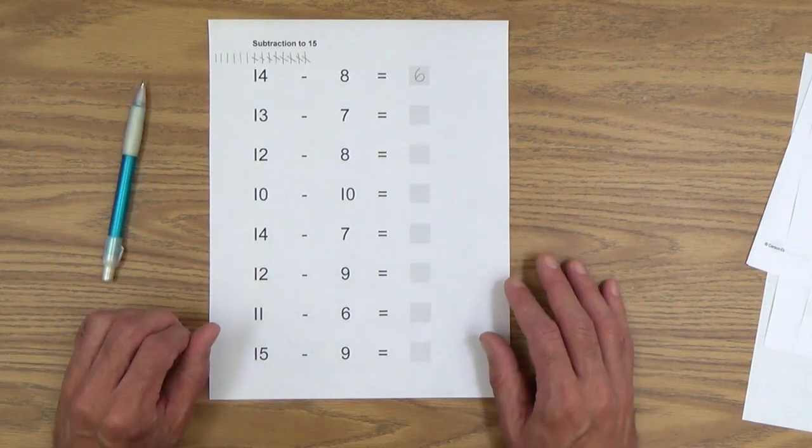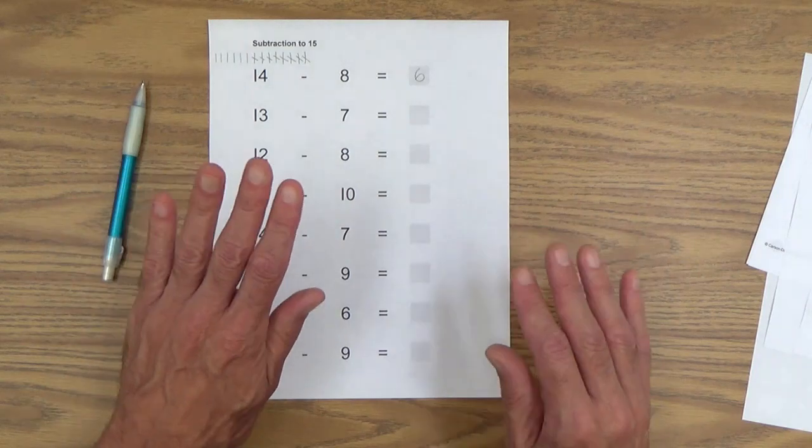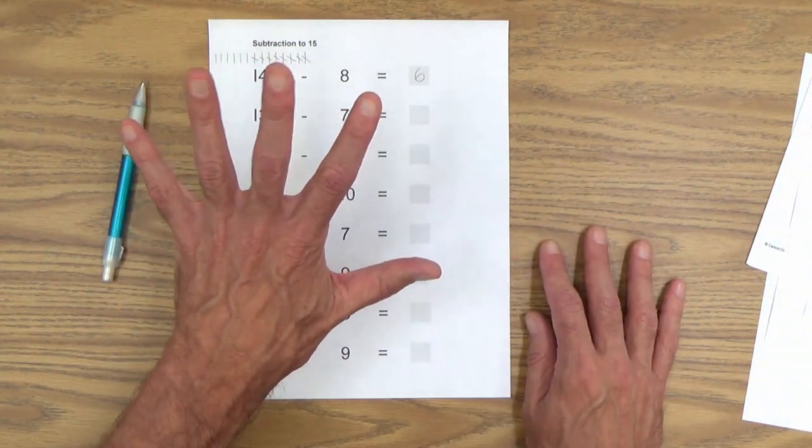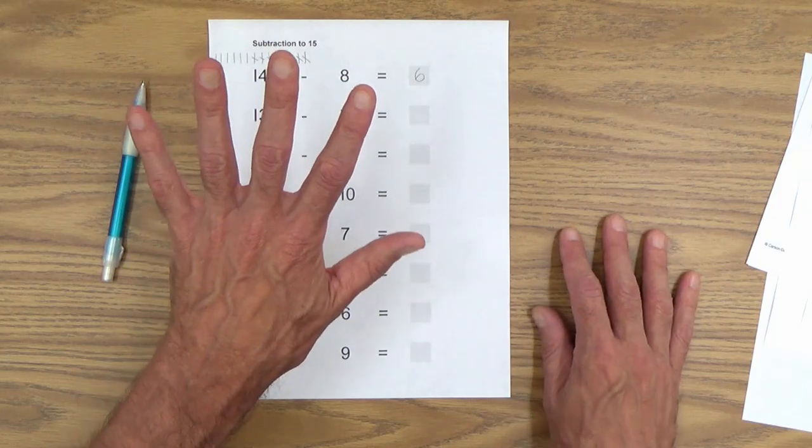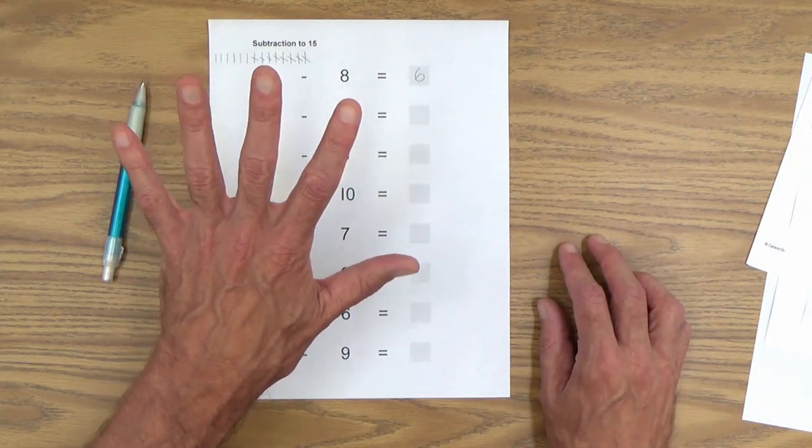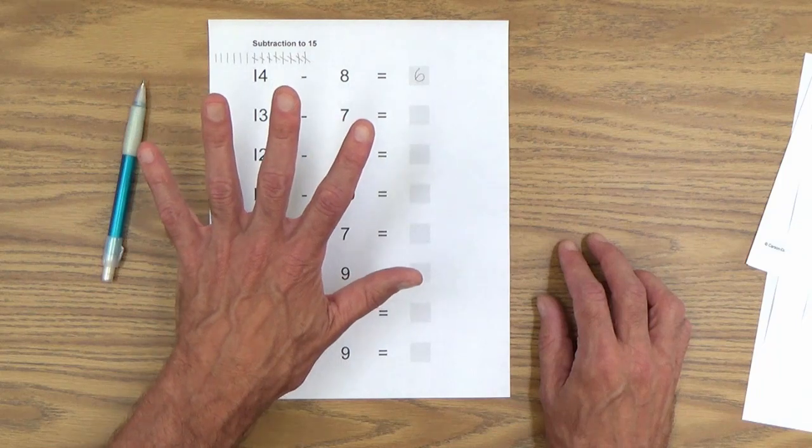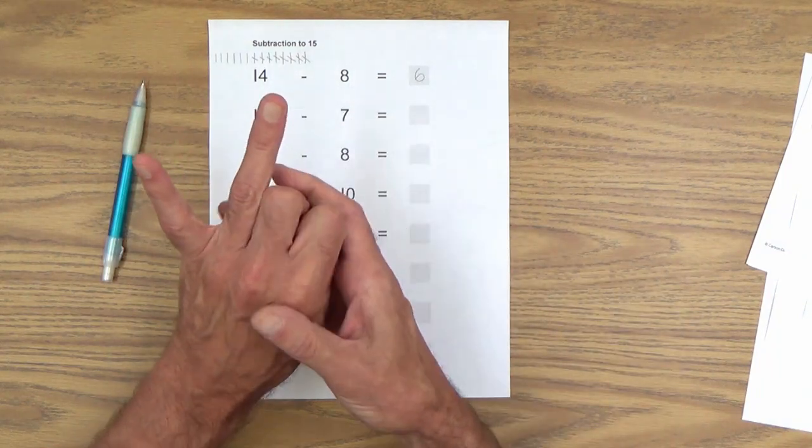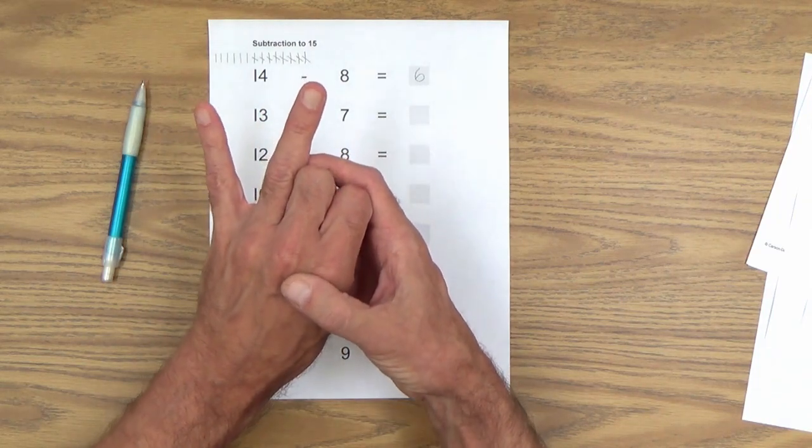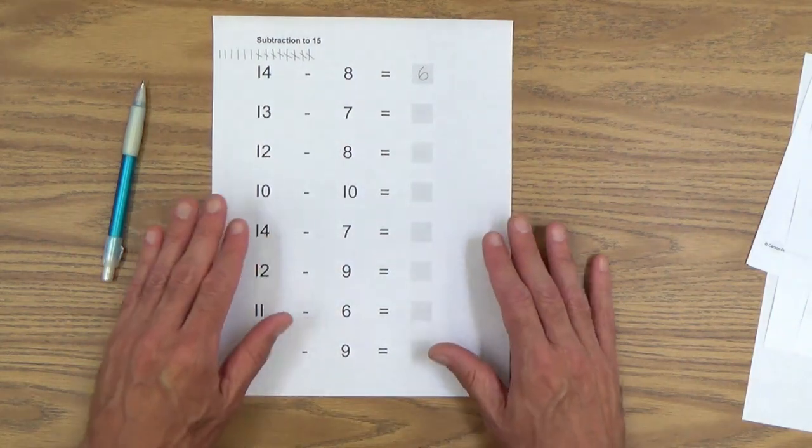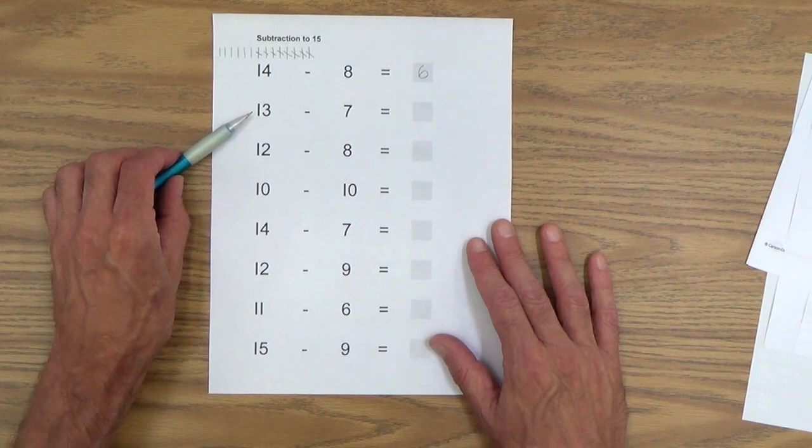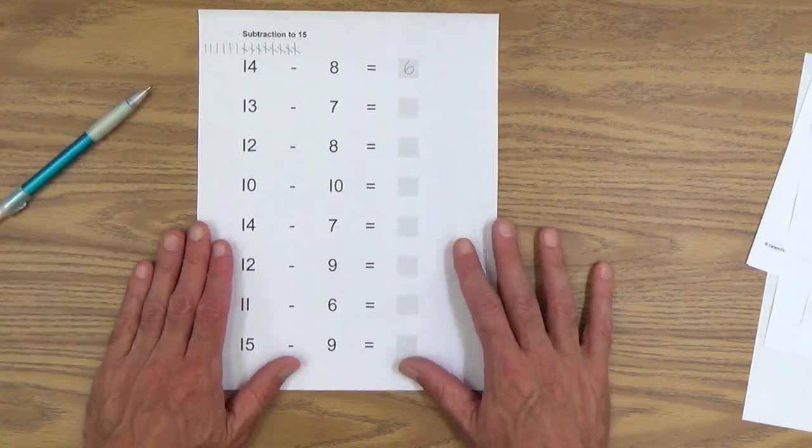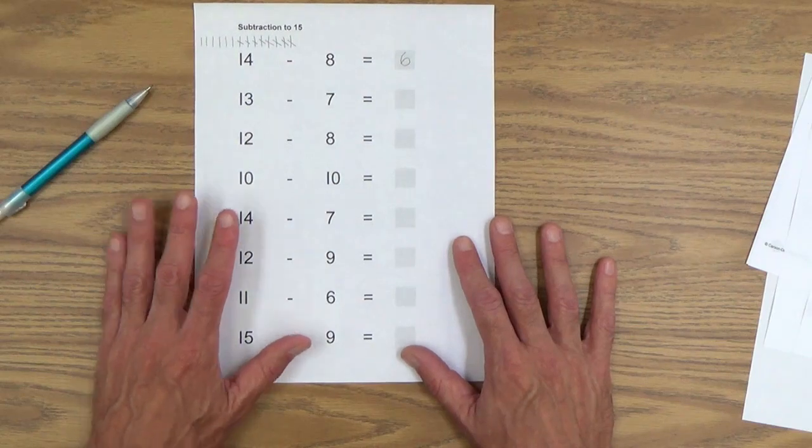There's another technique they can use with their fingers. With the smaller numbers, we used this technique: 5 minus 3 equals how many. Your child put out 5 fingers and put down 3 of them, and 2 were left. With these bigger numbers, you really can't do that because you don't have 13 or 12 fingers. So here's a better way. You can have your child switch over to this way.